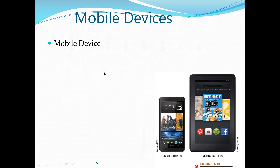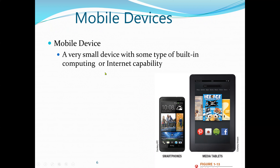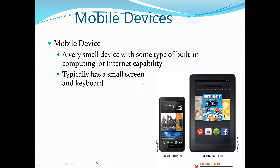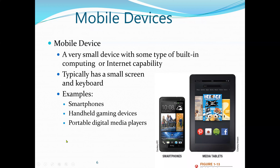The next category is mobile devices. A mobile device has special components for input, processing, output, and storage. Examples include smartphones and tablets — small devices with built-in computing or internet capabilities. Most smartphones can be used to browse the internet. They typically have a small screen and keyboard. Other examples include hand-held gaming devices like PS4 and portable PlayStations, portable digital media players, and media tablets.